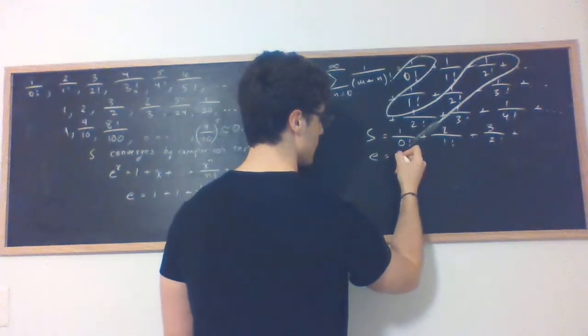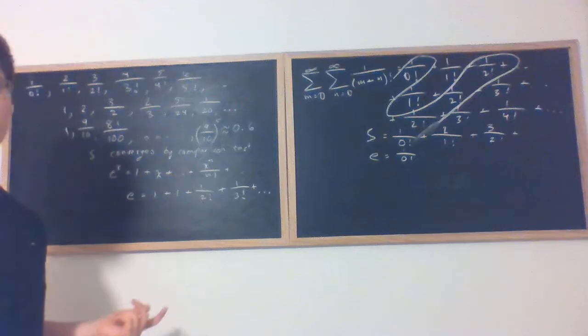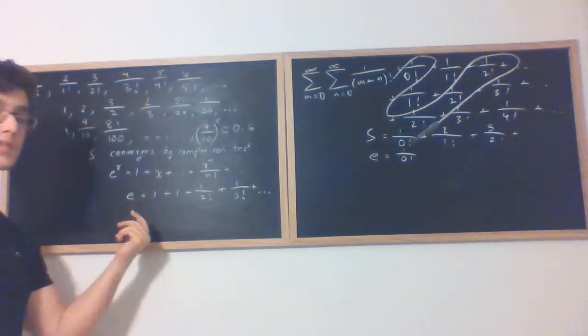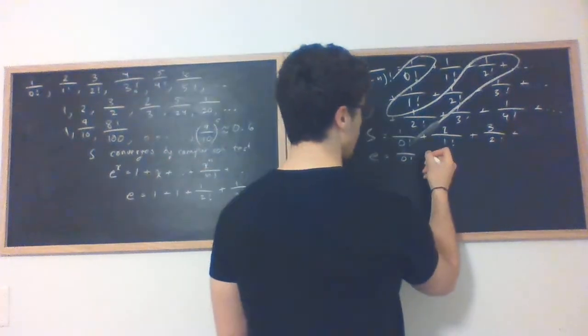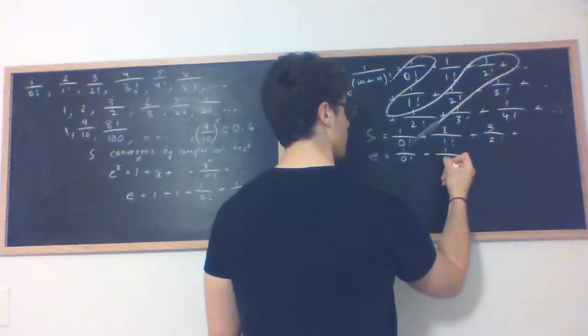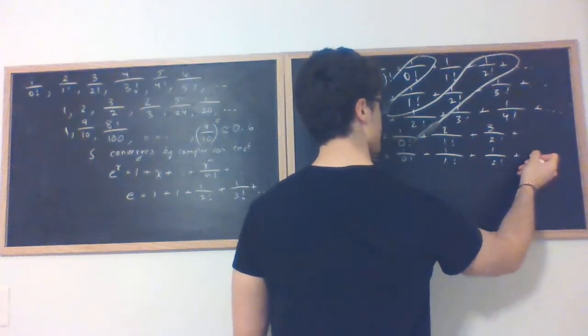We're going to put e underneath and see what happens. Also, 1 plus 1, we could just be fancy and write 1 as 1 over 0 factorial or 1 over 1 factorial. But, let's proceed. 1 over 2 factorial and so forth.